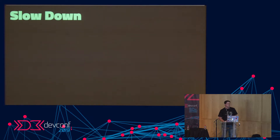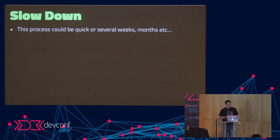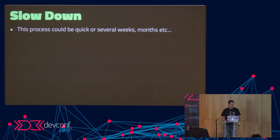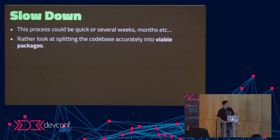It's very important to actually slow down. If you try to do this on an actual monolith, it could be very quick or it could take several weeks — if you have millions of lines of code, it's going to take months to split it out. The important part is not to split everything at once, but to split the code accurately. You want an idea of how you'll split it, but you're not going to split everything all at once.